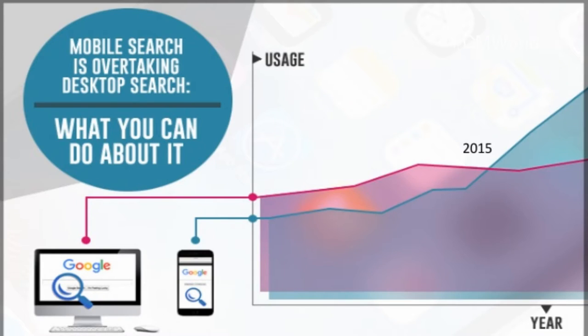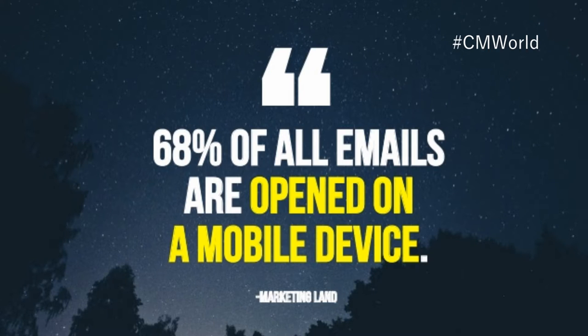The first thing to understand is this statistic: mobile search overtook desktop search in 2015. About 66 to 68 percent of all emails are opened on a mobile device, according to Search Marketing Land. So if email is primarily opened on a mobile device, you should understand that email is a mobile strategy. If you're crafting a mobile strategy and don't account for email, you're missing the mark. Email is a very contextual, direct piece of communication that can be timely and highly relevant.